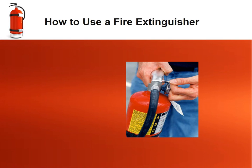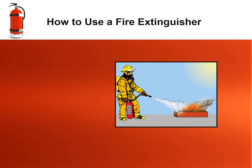The P in PASS stands for pull the pin, which allows you to discharge the fire extinguisher. The pin prevents accidental discharge from squeezing the handle. Next, aim at the base of the fire, preferably about six inches below or under the fuel, to avoid blowing or scattering the fuel around. If you aim at the flames, the extinguishing agent will fly right through without stopping the fire.